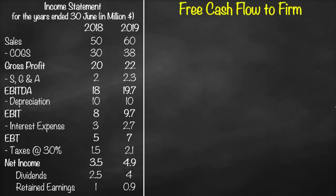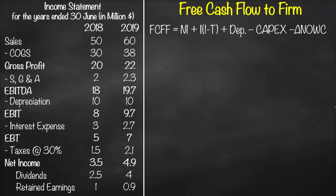We have different formulas for free cash flow to firm. One of these formulas is: Free Cash Flow to Firm = Net Income + Interest × (1 − Tax Rate) + Depreciation − Capital Expenditure − Change in Net Operating Working Capital. From our income statement we have net income of 4.9, add back interest of 2.7 multiplied by (1 − 30%) plus depreciation of 10.